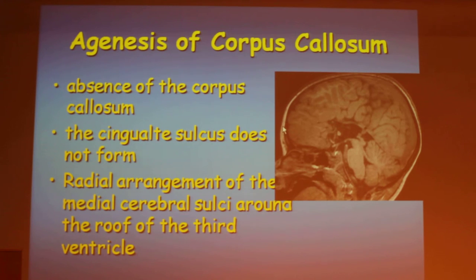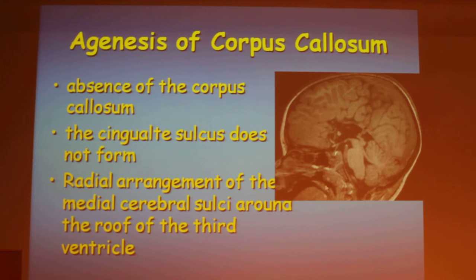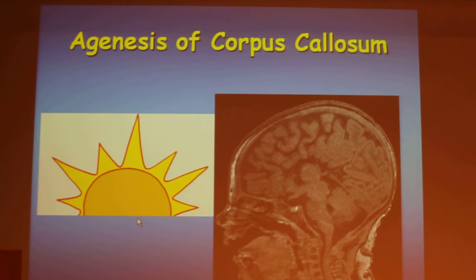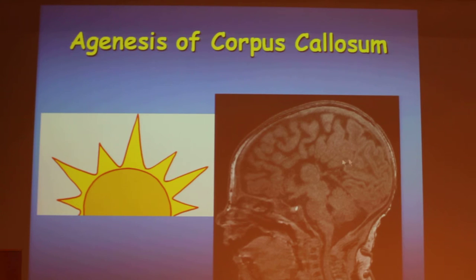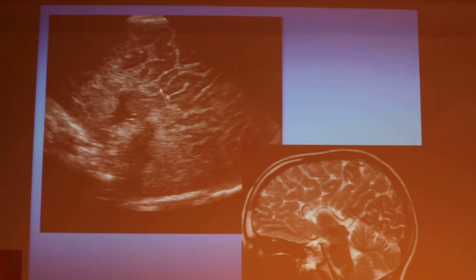The signs include absence of the corpus callosum and cingulate sulcus, and the radial arrangement of the medial cerebral sulci around the roof of the third ventricle — also called the sunshine sign. The massa intermedia is the sun, and the rays are the sulci diving towards the massa intermedia. This is also seen on ultrasound.